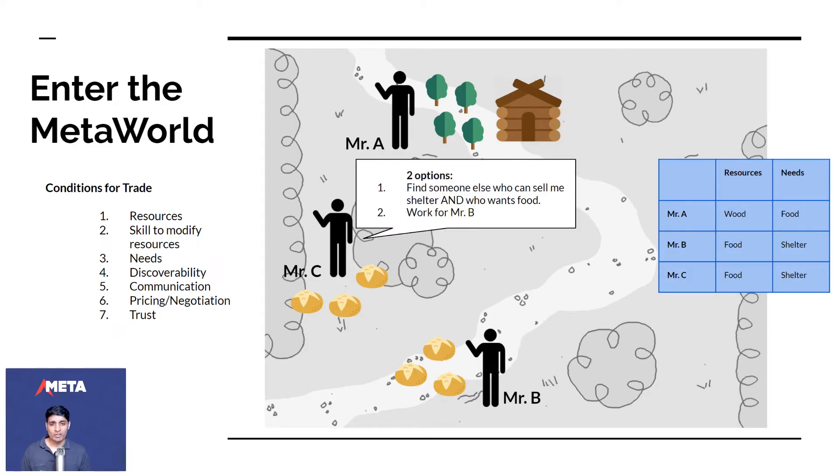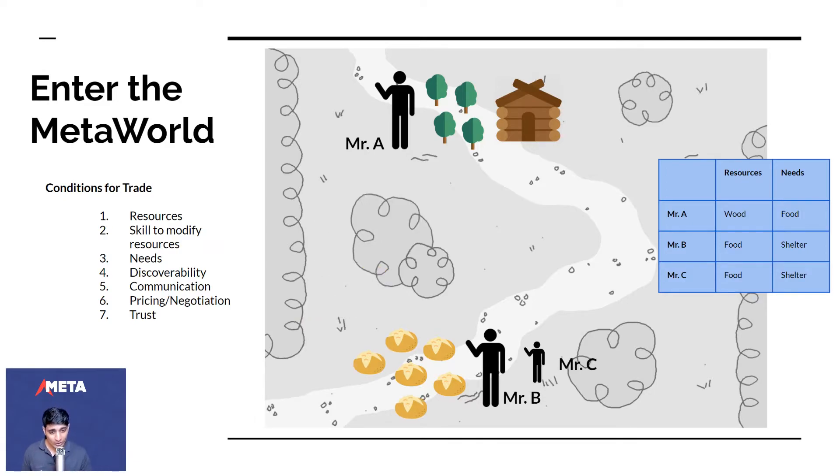So Mr. C is rejected. He feels really bad about it. So he has two options. The first option is find somebody else who can sell me shelter and who wants food - the two preconditions. A, I really need shelter and B, who wants my things, who wants my food? Or, I go work for Mr. B because I can create potatoes. I can pull out potatoes from the ground. I've also found potatoes. Mr. B is anyway getting the deal flow from Mr. A. They've already built a relationship. I might as well go and work for Mr. B.